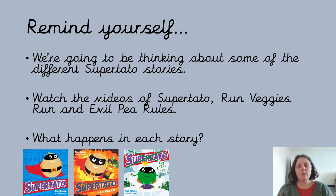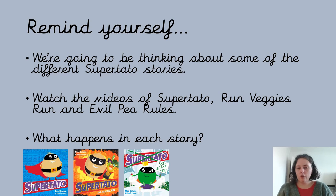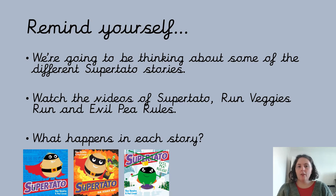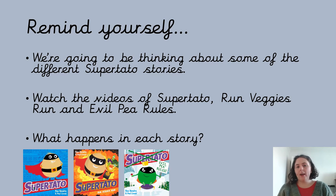There is more than one story about Supertato — there is a whole series of stories, and we're going to be thinking about three of them today. Before you go any further, if you haven't done so already, you can watch the story of Supertato again. There is also the story called Run Veggies Run, and another one called Evil P Rules. The video links for these are going to be posted in the chat on Microsoft Teams, so you might want to click those and go watch the stories to remind yourself of what happens, or perhaps enjoy them for the first time. After you've watched them, think about what happens in those stories and what characters are in them.